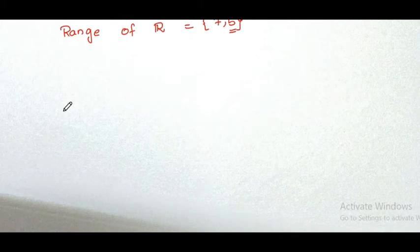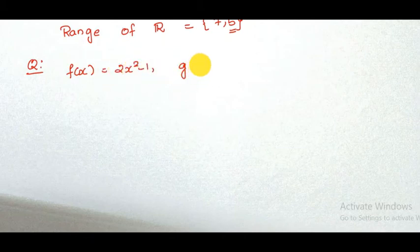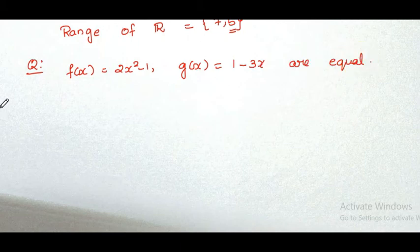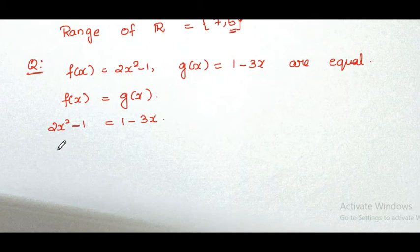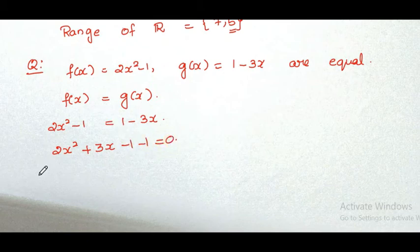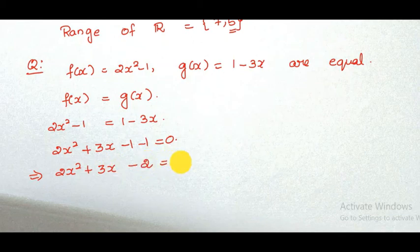Next question: find the domain for which the function f(x) = 2x² - 1 and g(x) = 1 - 3x are equal. We need to find the domain, so since both functions are equal, f(x) = g(x) gives us 2x² - 1 = 1 - 3x. Bringing -3x to the left side gives positive 3x, so 2x² + 3x - 1 - 1 = 0, which simplifies to 2x² + 3x - 2 = 0.